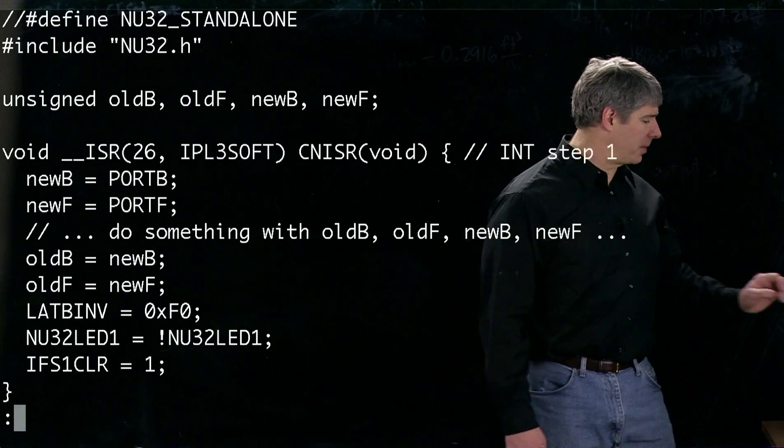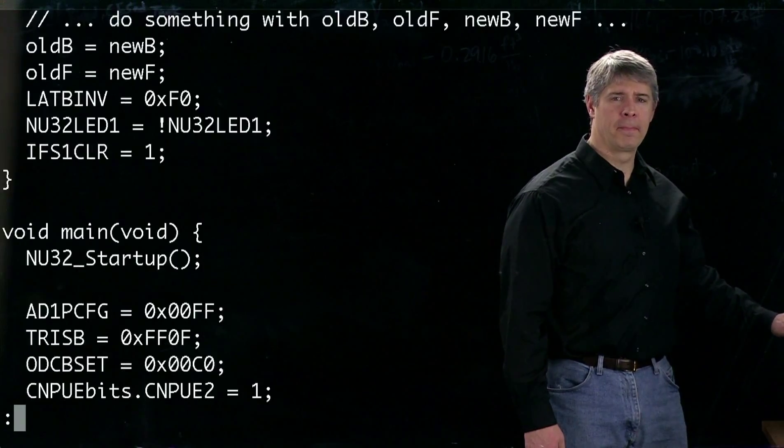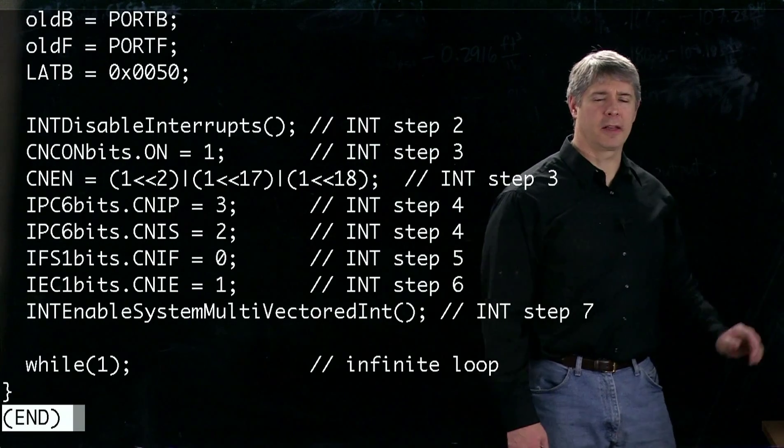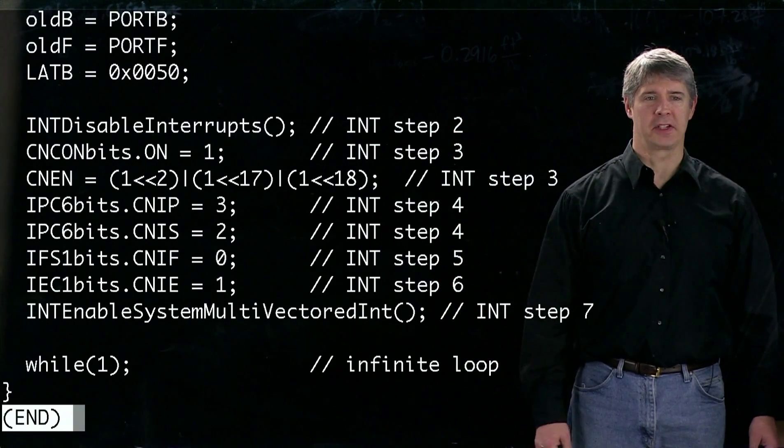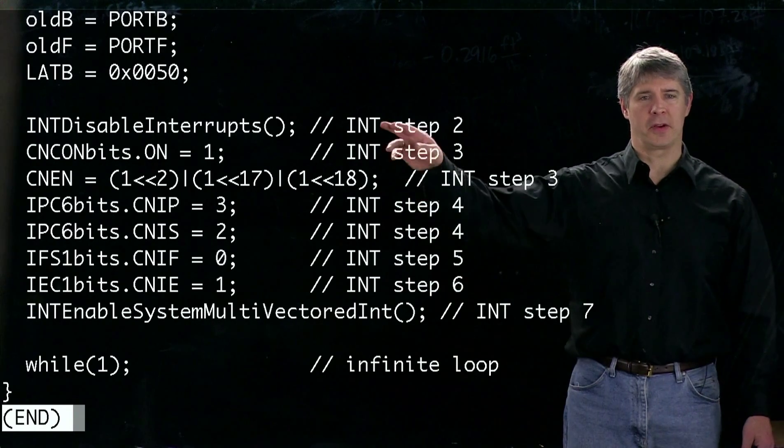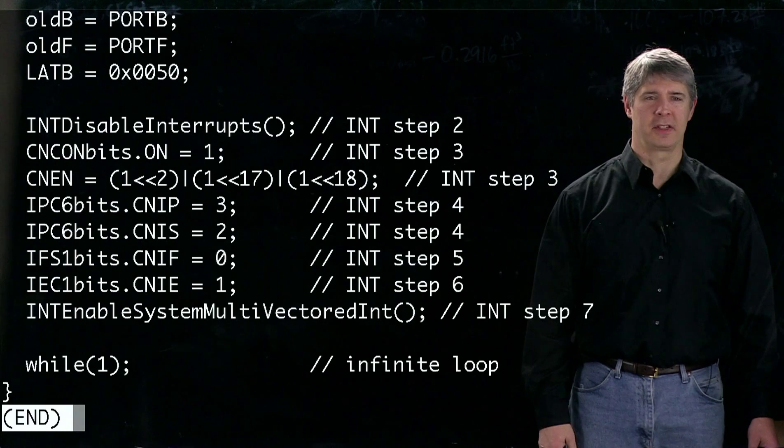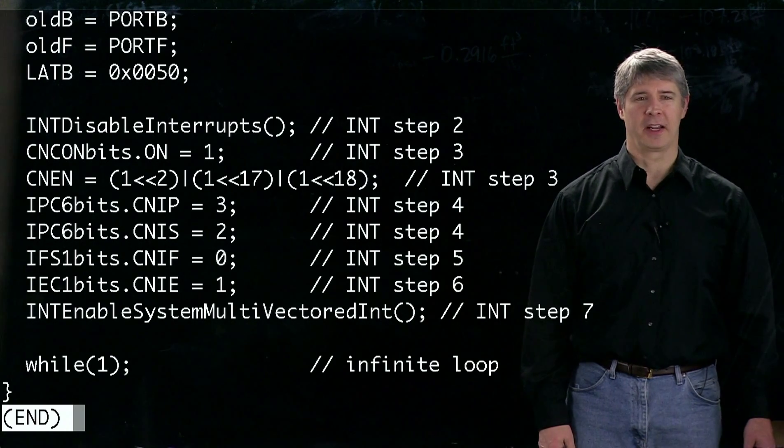Let's scroll down to the bottom of the program and take a look first at setting up the change notification interrupt. The first thing we do is disable interrupts. That's step two in our seven-step interrupt setup routine.